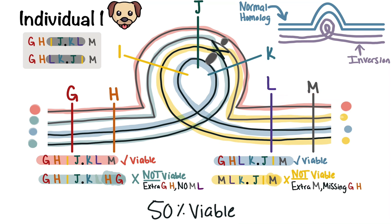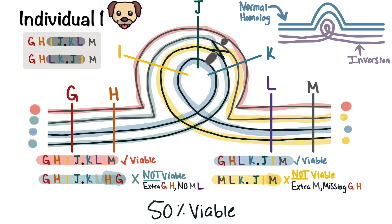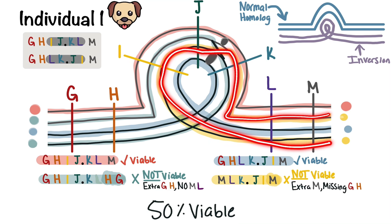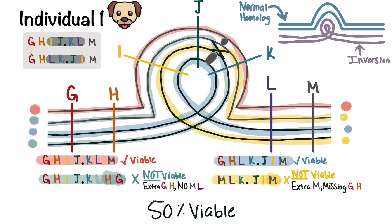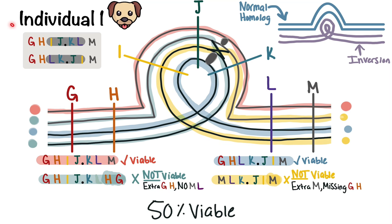If we follow the blue one, we can tell that it's going to be viable because it has all portions of a chromosome, it has a centromere, and it doesn't have any deleted portions of a chromosome. But if we follow the yellow one, it crosses over between J and K, and it's not going to be viable because it has an extra M and it's missing the G and the H. Therefore, individual one's gametes are only going to be 50% viable.